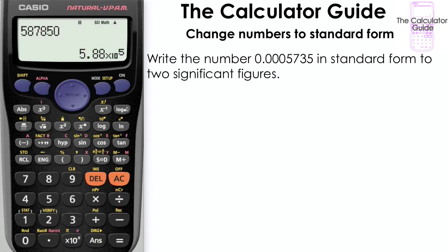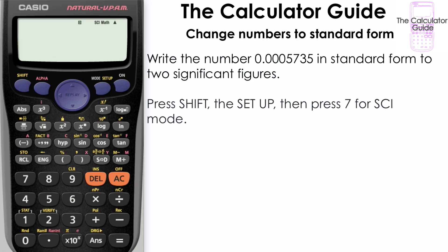The second example now. Write the number 0.0005735 in standard form to two significant figures. Press SHIFT and SETUP, and then press 7 for SCI mode. We need to change the number of significant figures to two.